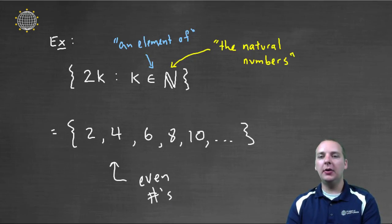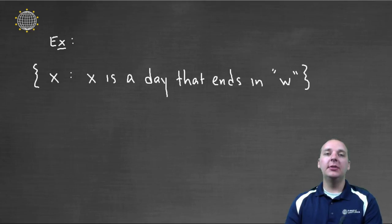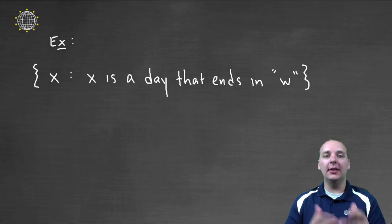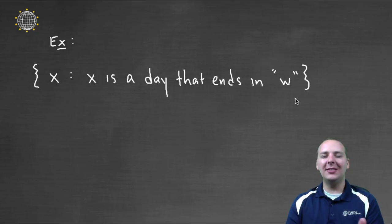Last thing I'll say about sets and set notation is sometimes we have these sets, and we'll just use an example of set builder notation, but they don't have any elements in it. Look at this example. I want a set of all the X's such that X is a day of the week that ends in the letter W. That doesn't make any sense. You go through all the elements in the days of the week. Sunday, Monday, Tuesday, Wednesday, Thursday, Friday, Saturday, etcetera. They all end in Y. They don't end in W.